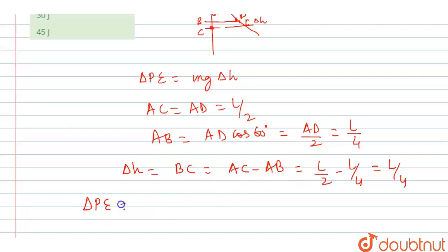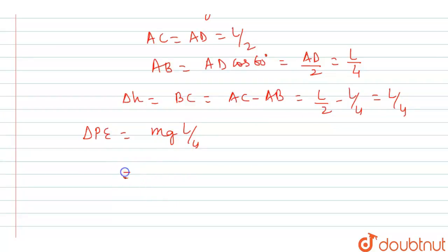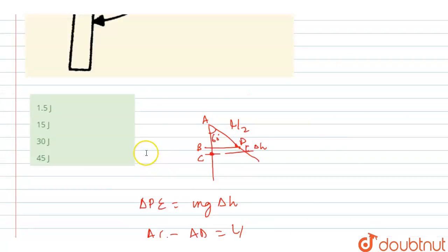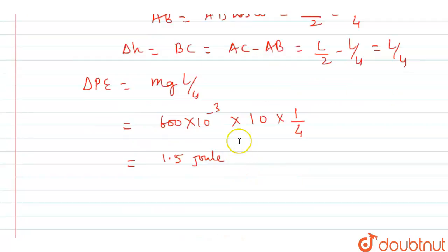So the change in potential energy is mg times L upon 4. Putting in the values: mass is 600 grams, which is 0.6 kg; g is 10; and since it's a meter stick, L is 1 meter, so L upon 4 is 0.25. Solving this, we get 1.5 joules. Looking at the options, the correct answer is option A.